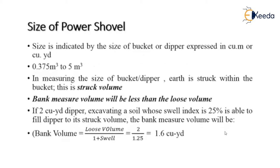The size of the power shovel is indicated by the size of the bucket, which is also called a dipper. The size is expressed in cubic meters or cubic yards. The general size of the power shovel ranges from 0.375 cubic meters to 5 cubic meters.